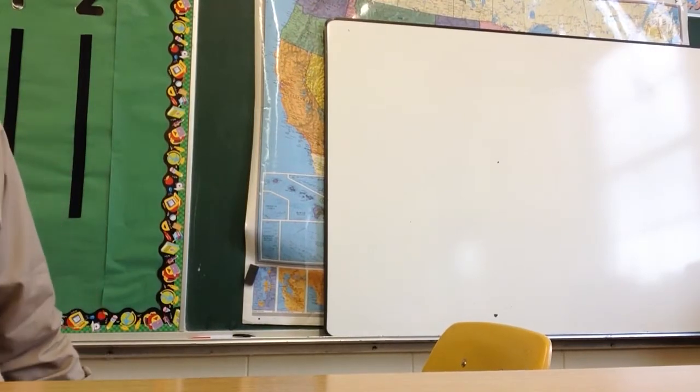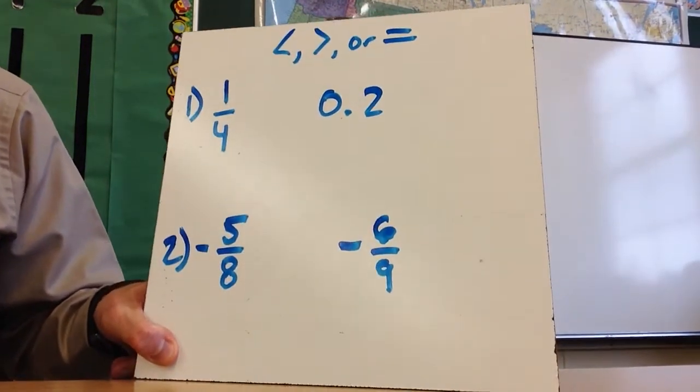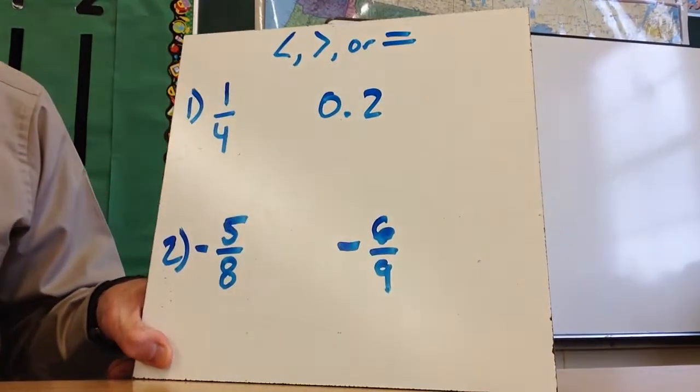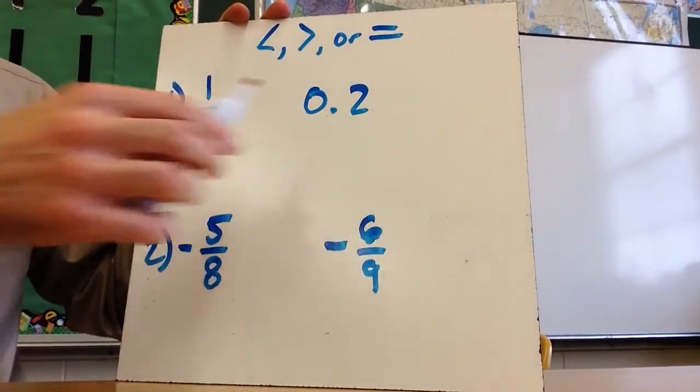All right, and finally, let's take a look at when we have to order fractions and decimals, so we're going to put these in order. We're going to use less than, greater than, or equal to as we describe them.